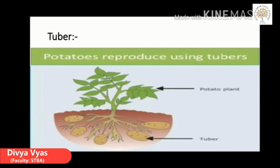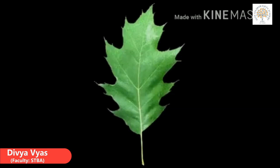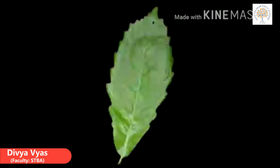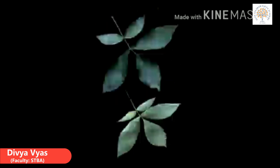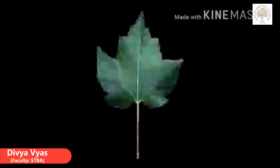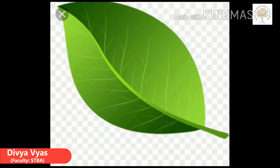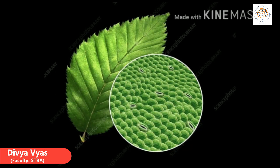We eat some such tubers. In some parts of our country, people also eat the stem of the lotus plant. Our next point is leaves. Leaves come in many shapes, but most leaves have a leaf blade, a main vein and side veins. Water is carried through the veins.